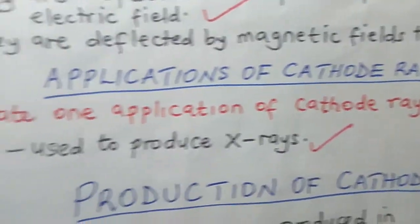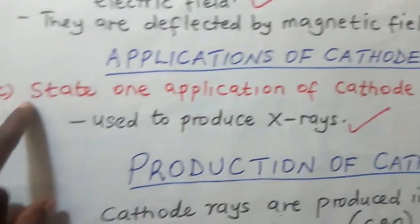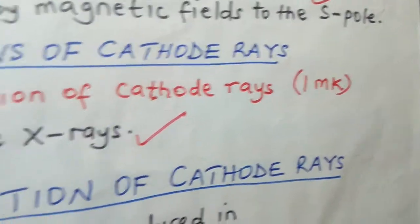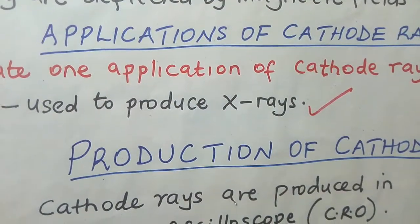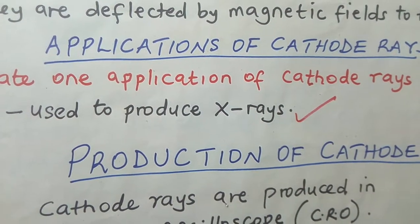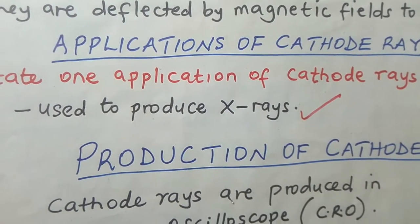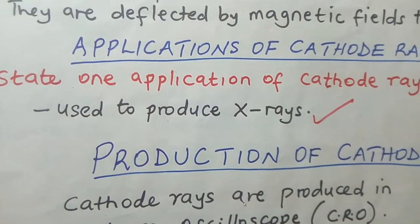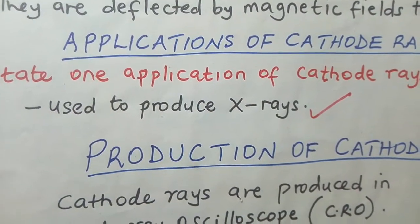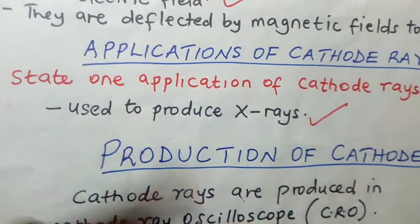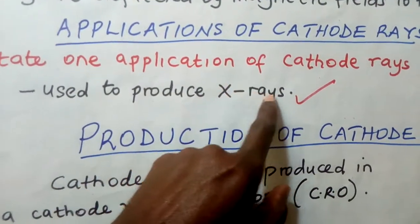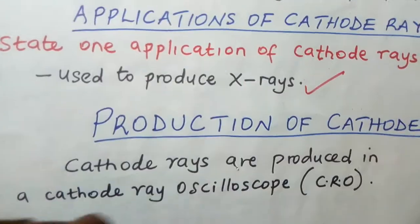Applications of cathode rays — there are quite many, but the examiner wants one. State one application of cathode rays: cathode rays are used to produce x-rays. Have you ever had somebody who went for an x-ray examination in a hospital? We shall talk about that in detail, but for now those x-rays are produced with the help of cathode rays. Before we look at how x-rays are produced, let us see how cathode rays are produced.